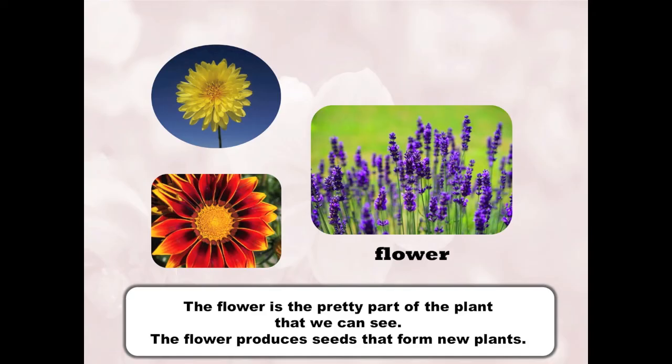The flower is the pretty part of the plant that we can see. The flower produces seeds that form new plants.